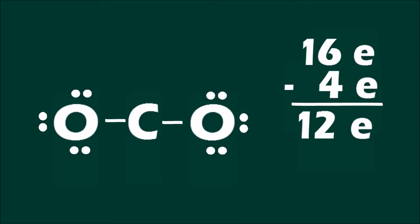With only 12 electrons remaining, there are only enough electrons to satisfy the octet for the oxygen atoms. According to this structure, carbon does not have a full octet.